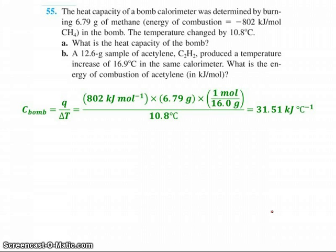To calculate the heat capacity of the bomb, I just take my heat and divide it by the temperature change, just like we did earlier. My heat is a little more complicated. I have to find it by taking my 802 kilojoules per mole and multiplying it by the 6.79 grams, which then needs to be converted to moles. So I've got kilojoules per mole times moles divided by the temperature change, which shows me that I get 31.51 kilojoules per degree Celsius. Notice the C is positive. The delta H was negative, but the C is positive - the calorimeter rose in temperature.